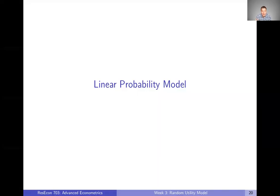So far this week in these lecture videos, we've talked about discrete choice models, the random utility model to solve a discrete choice model, and then the choice probabilities that come out of a random utility model. And then in this video, we're going to take a bit of a diversion and talk about linear probability models.